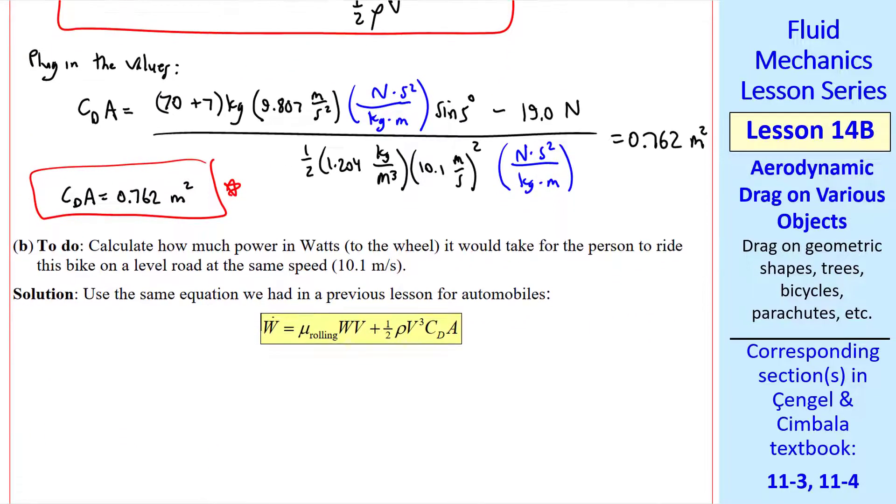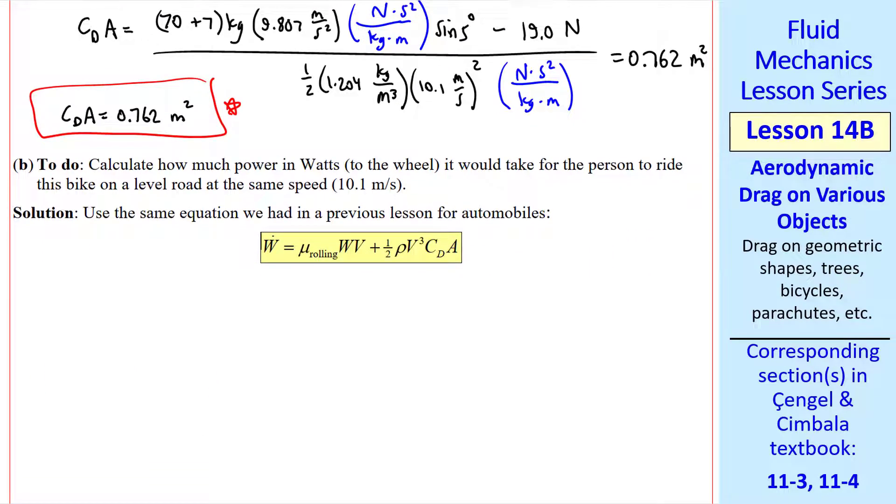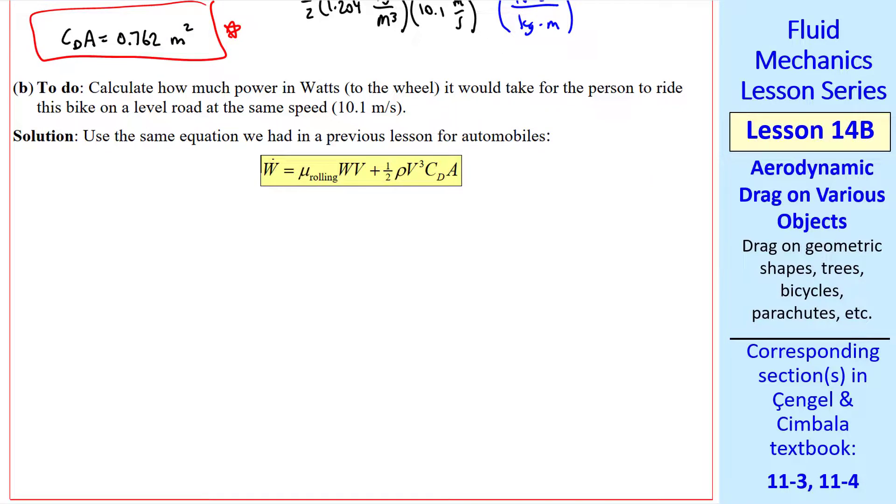For part B, we're asked to calculate how much power to the wheel it would take for the person to ride this bike on a level road at the same speed. Just like cars, bicycles have a rolling resistance drag and an aerodynamic drag. So we can use the same power equation we had in a previous lesson for automobiles, where mu rolling times w is the rolling resistance force, which we'll approximate as the same as in part A. Drag area is a constant that does not change with speed.